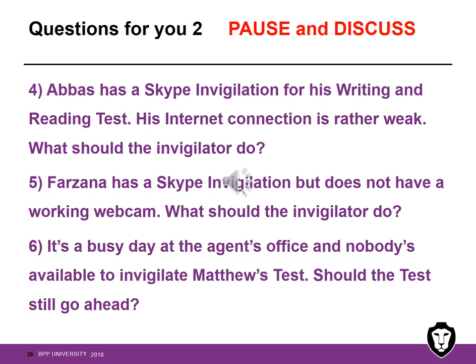Questions four to six: Number four — Abbas has a Skype invigilation for his writing and reading test and his internet connection is rather weak. What should the invigilator do? Number five — Farzana has a Skype invigilation but does not have a working webcam. Number six — it's a busy day at the agent's office and nobody's available to invigilate Matthew's test. Should the test still go ahead?